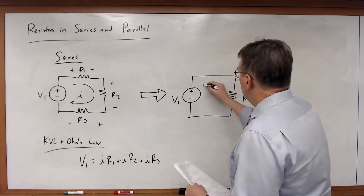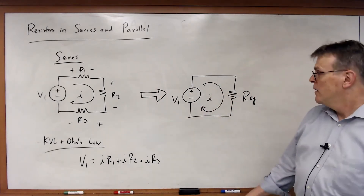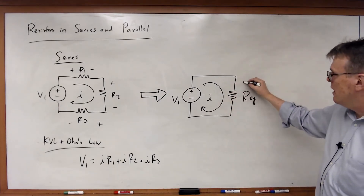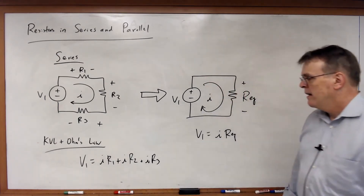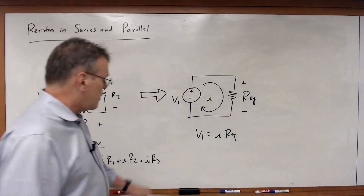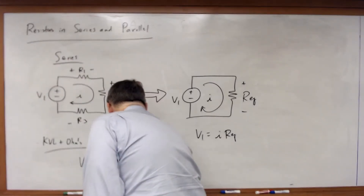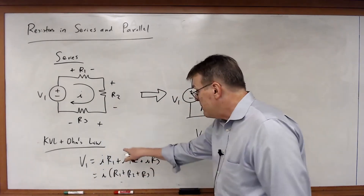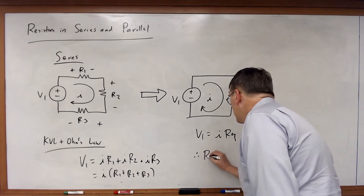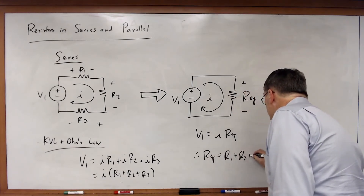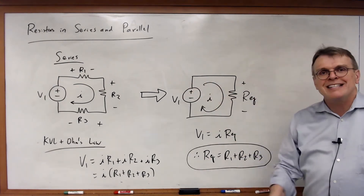The claim is that there exists a single equivalent resistor such that the current I is the same in both circuits. For the equivalent circuit, Ohm's law gives V1 equal to I times REQ. If those two equations are equivalent — same V1 and same I — then REQ must equal R1 plus R2 plus R3. Resistors in series simply add together.